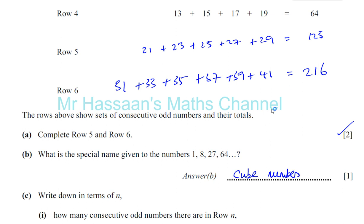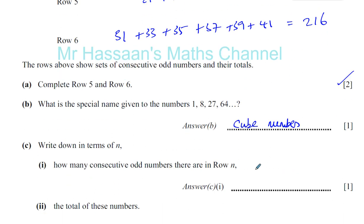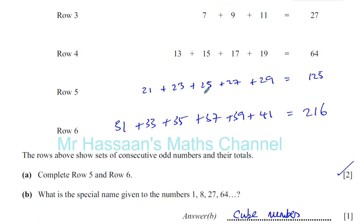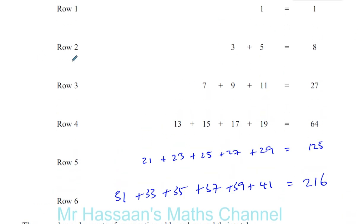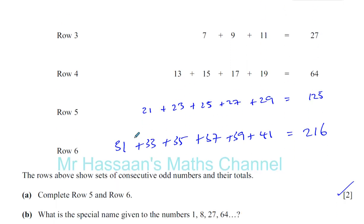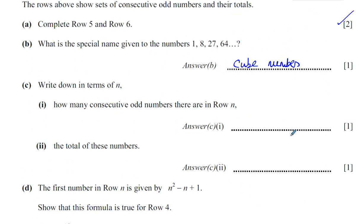Write down in terms of n how many consecutive odd numbers there are in row n. How many numbers are in row 1? One. Row 2? Two. Row 3? Three. Row 4? Four. Row 5? Five. So in row n there are going to be n consecutive odd numbers. The total of these numbers is always the same as that number cubed — n cubed.